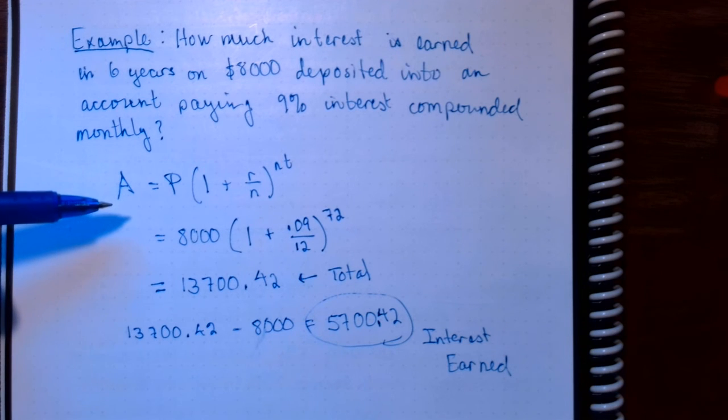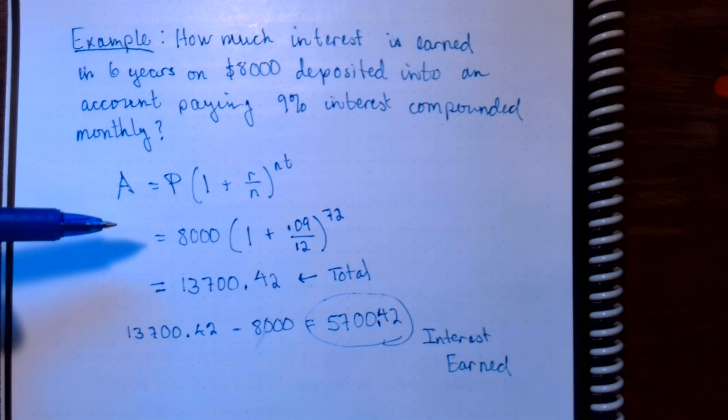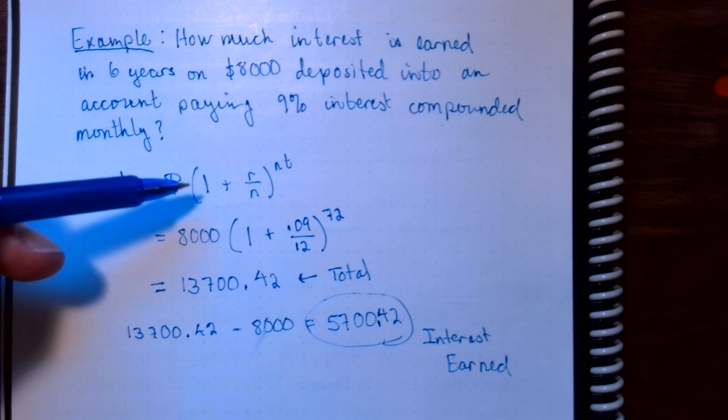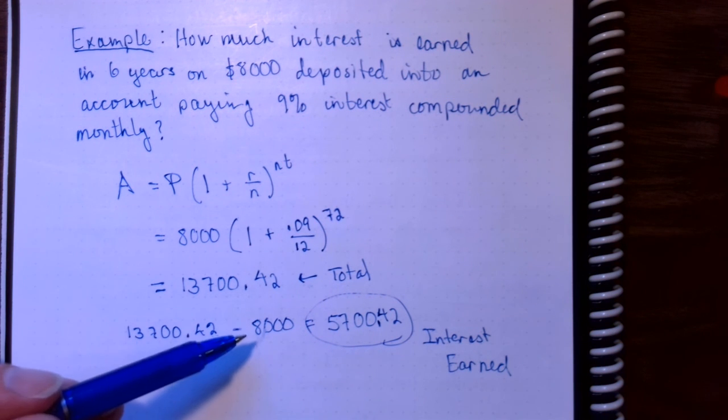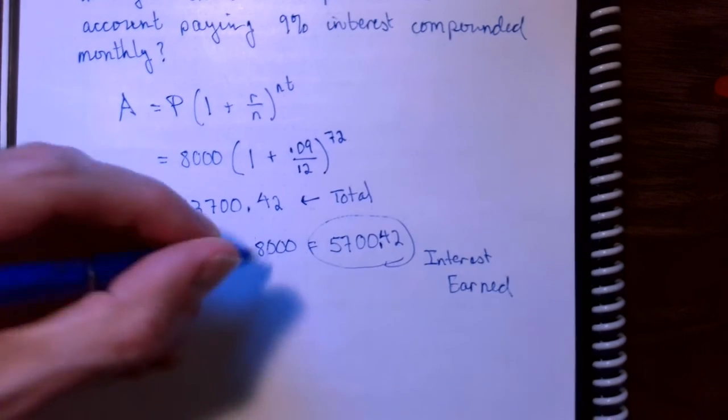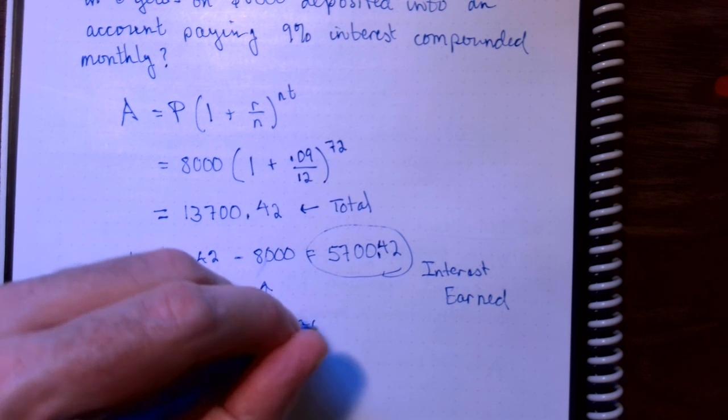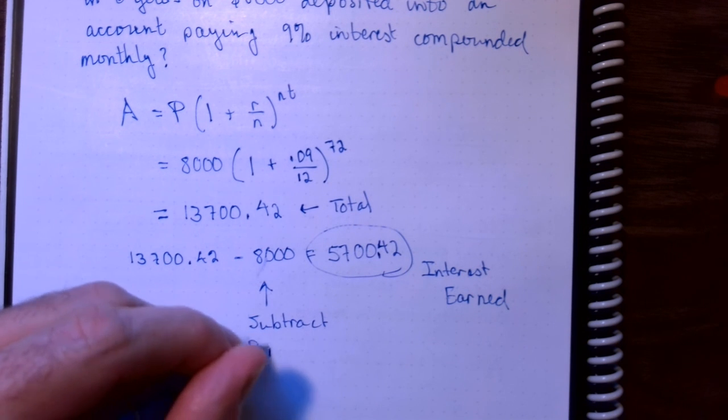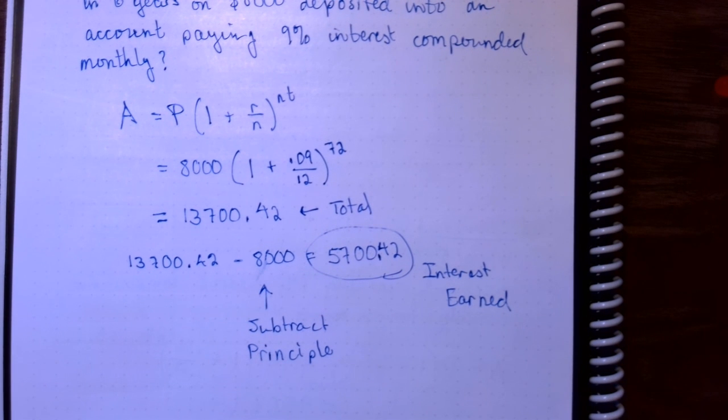So when you're dealing with simple interest, if you want to find the future value, you have to take the principal and then tack on the interest. For compound interest, if you want to find the future value, just use this formula. If you want to find the interest earned, you have to subtract the original principal. So finding the interest earned has an extra step in this case.